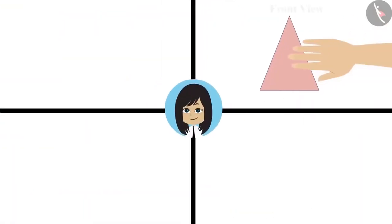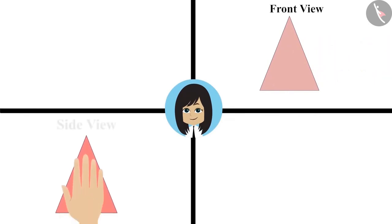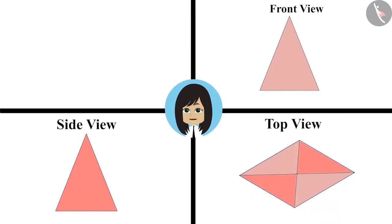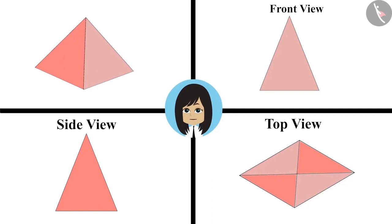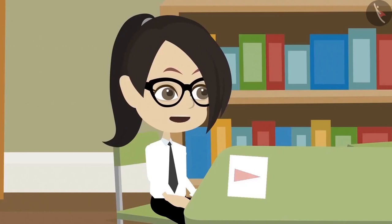Look at the front view of my drawing. This is a triangle. This is the side view of my drawing. This is also a triangle as before. And this is the top view of my drawing. What can this be? It has become very difficult. I will try to make it now, only then will I be able to guess. Let me first make a drawing of its side view. Now I will add its front view. It has four sides and all are triangles. That means it is a drawing of a pyramid. You are right.